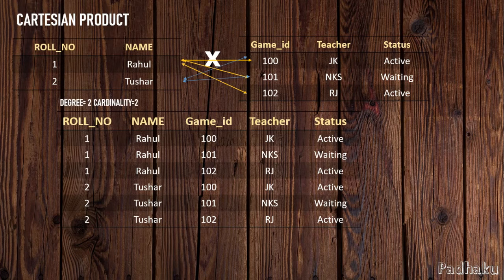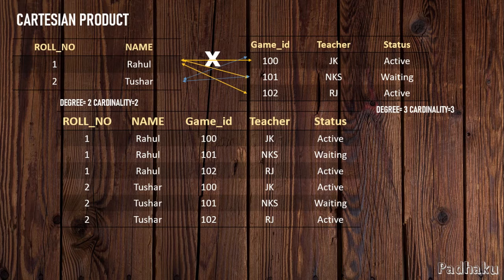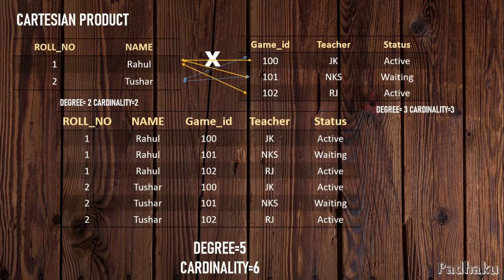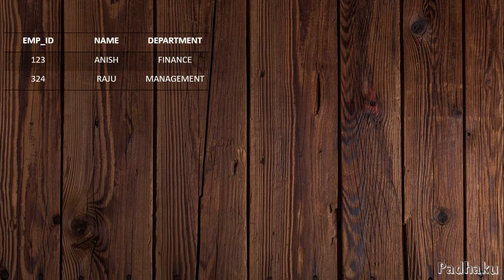The degree of the first table is two and cardinality is two, because there are two rows and two columns. The degree of the second table is three and cardinality is three, because there are three rows and three columns. For the Cartesian product table, the degree is five because there are five columns, and the cardinality is six.